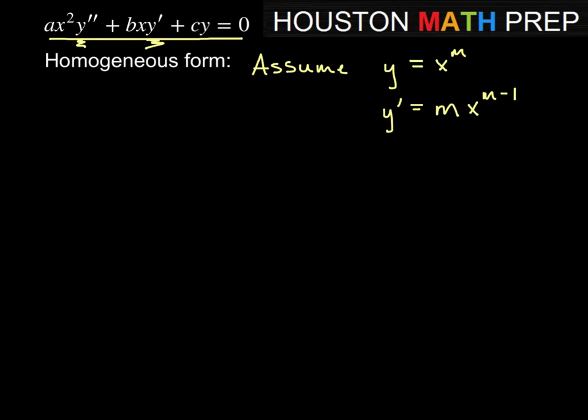If we do the derivative again, giving us y double prime, then we already have an m out front, so m minus 1 is going to join it out front. We'd get m and m minus 1 out front, and decreasing the power again would give us m minus 2 for y double prime.